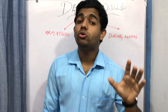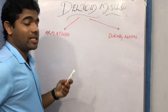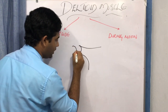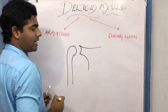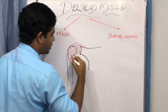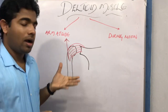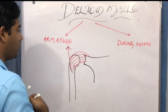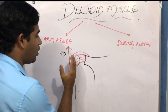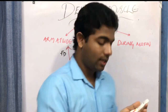When the deltoid is contracting, its action line produces one problem: it produces a superior translatory component. For example, with the glenoid fossa and the head of the humerus at resting length, the action line of the deltoid is superiorly directed. Taking the combined action line of anterior, middle, and posterior as the middle fiber's line — this superiorly directed translatory force will cause the humeral head to translate superiorly, and no rotatory movement will happen.